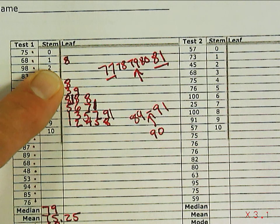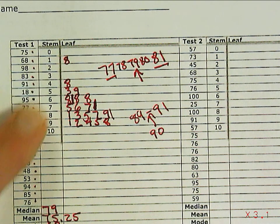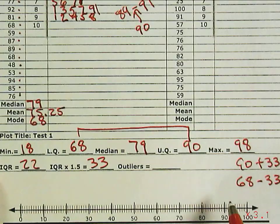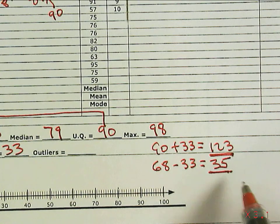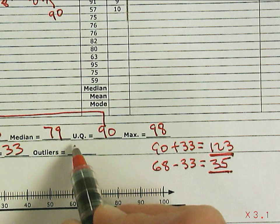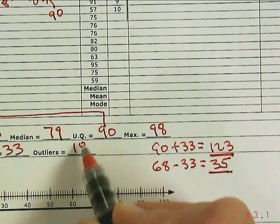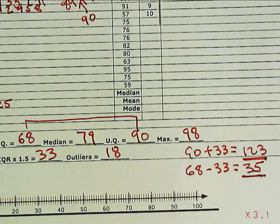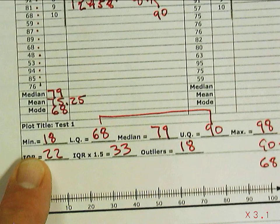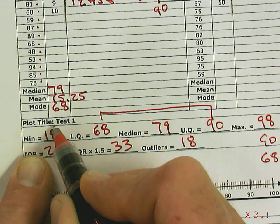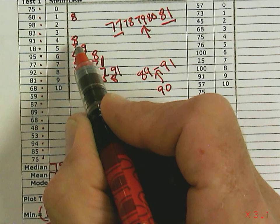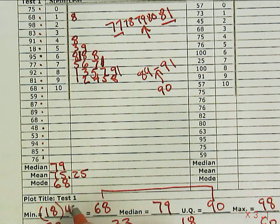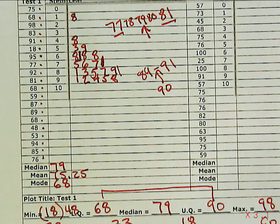The one number in our data set that's below 35 is the 18. We said before that 18 was going to affect the mean, and one of the reasons it affects the mean is because it's an outlier. We have one number, the 18, which is below 35, and so that number is an outlier. Our minimum is 18, but we're going to actually use the number 48 because that's really the lowest number that's not an outlier.